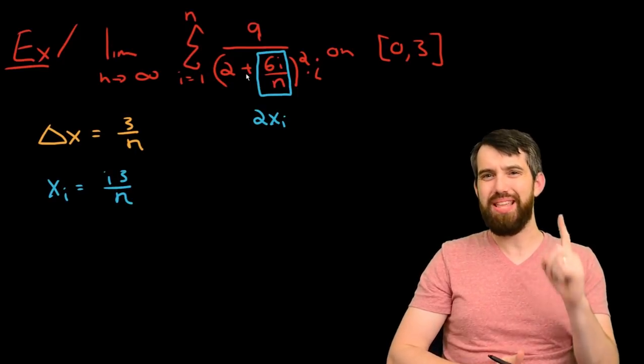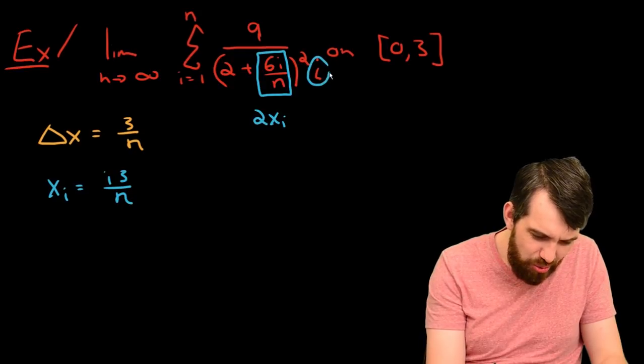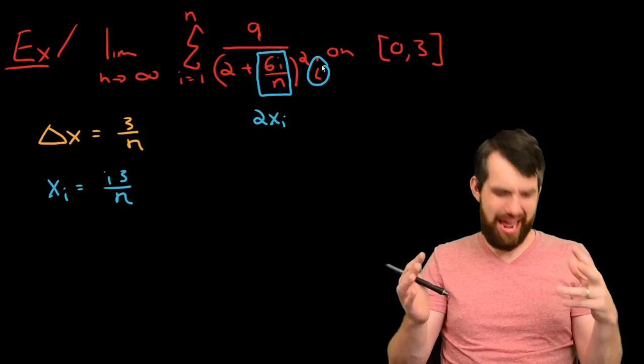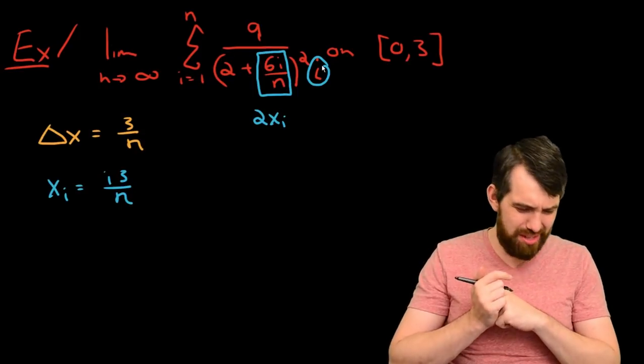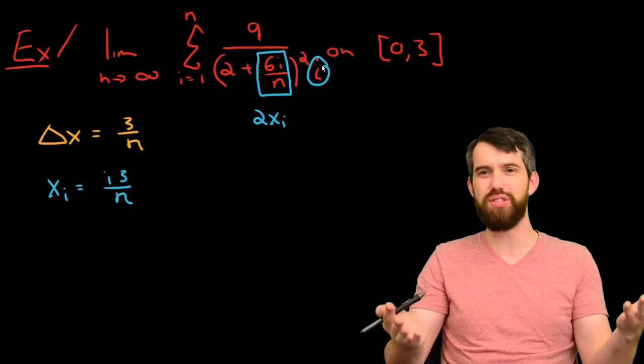Now, here's the tricky thing. I've got this remaining i, which is sticking out here on the right-hand side like a sore thumb. And then while I'm at it, I've got this weird i, but I also, I don't have another 3 over n anywhere. I don't have an obvious delta x, so what on earth is going on?